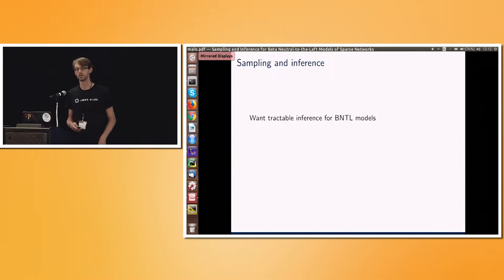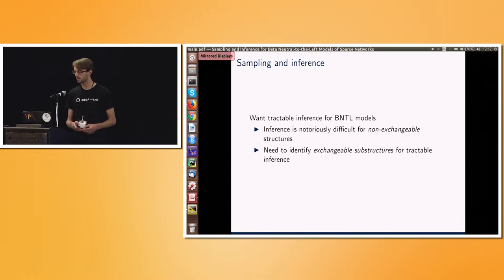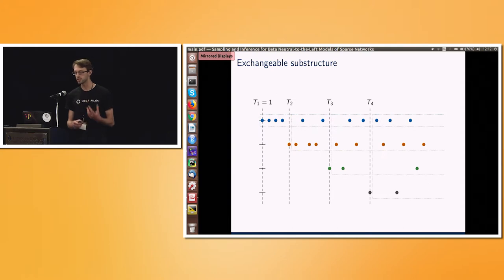So, yeah, as I've just said, we want tractable inference here. But the real blocker is exchangeable models we know that we can do inference there, but it's notoriously hard to do inference with non-exchangeable models. So the trick is generally to identify exchangeable substructures. Say, if you think about a hidden Markov model, it's not an exchangeable model, but if you take all the observations from a fixed latent state, then that would be an exchangeable substructure.